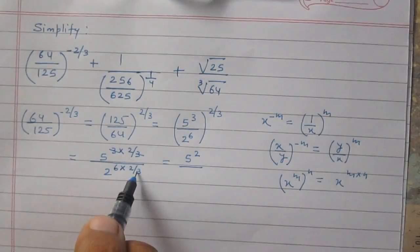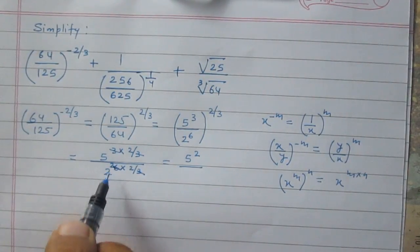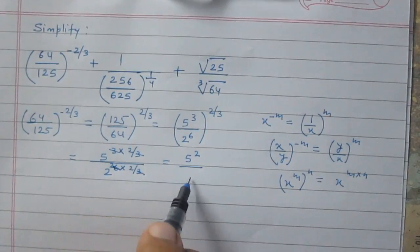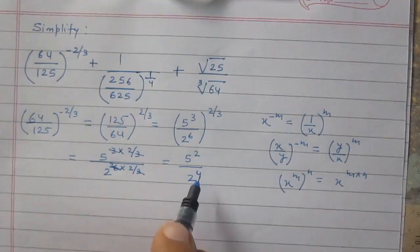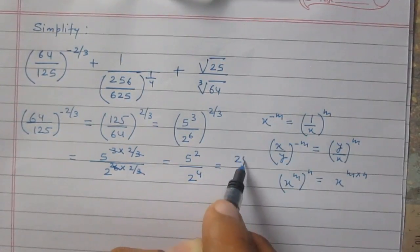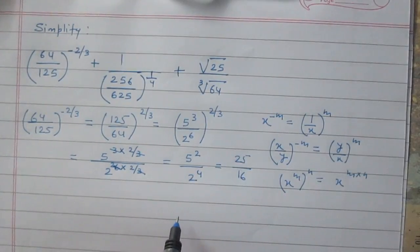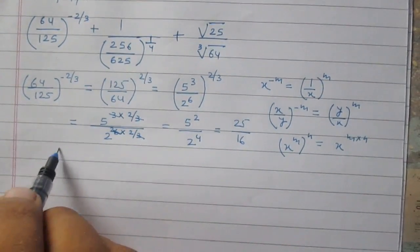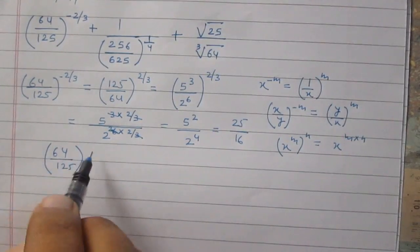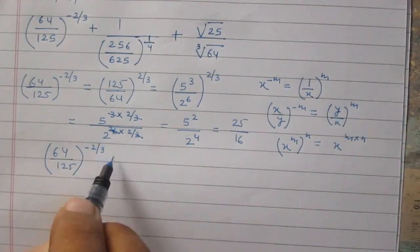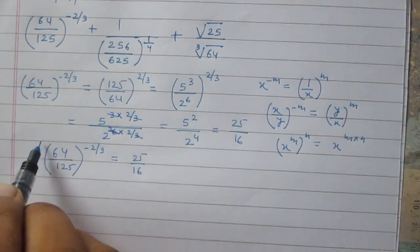In the denominator, 6 and 3 are cancelled, giving 2 raised to the power 4. So in the denominator we will get 2 raised to the power 4, which is 16. Therefore, 64 upon 125 raised to the power minus 2 by 3 is equal to 25 divided by 16.